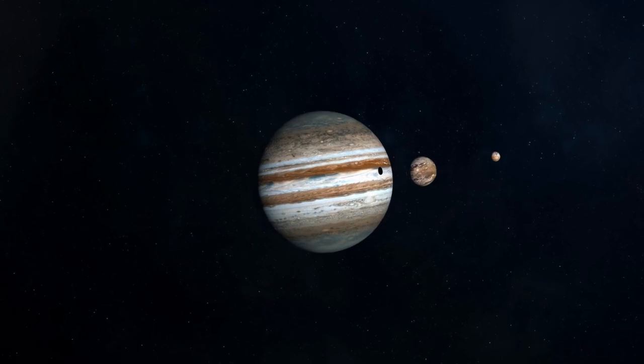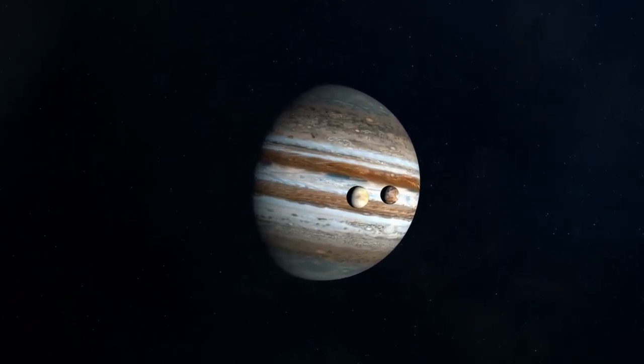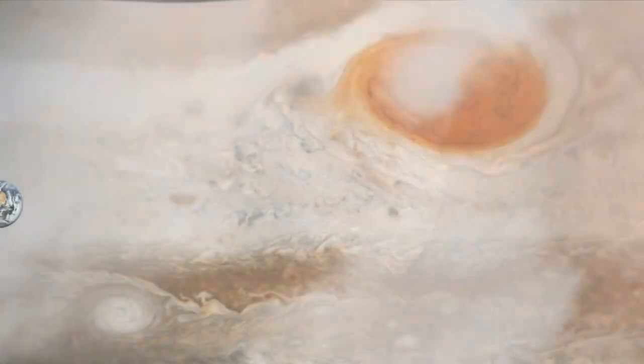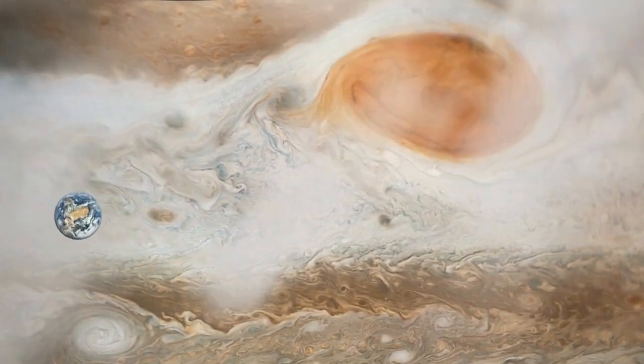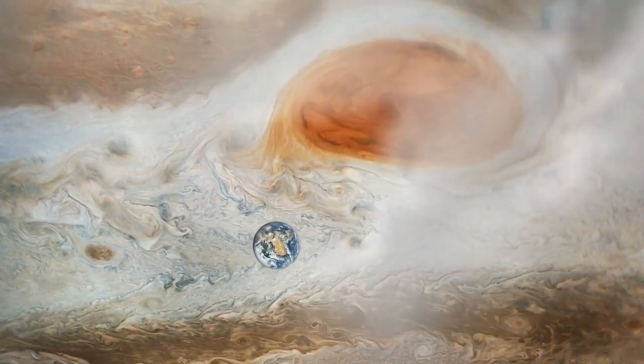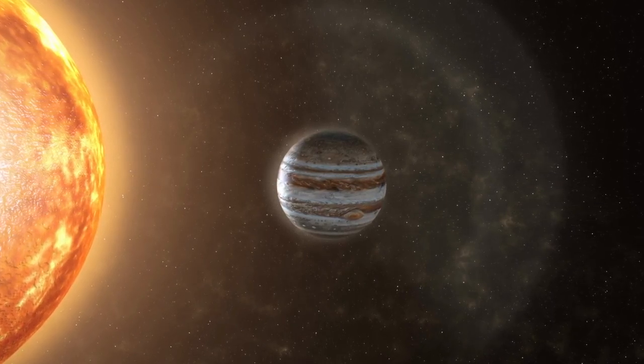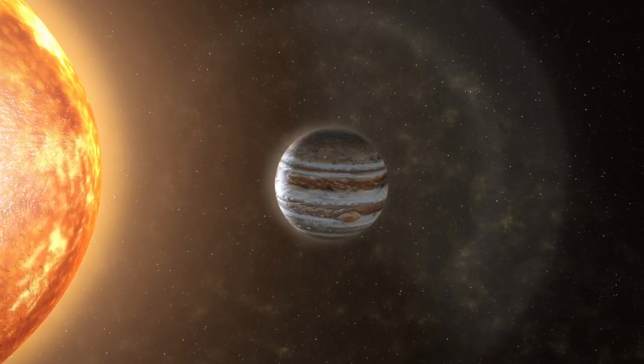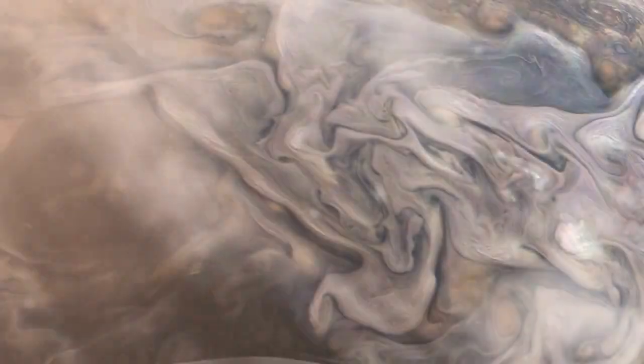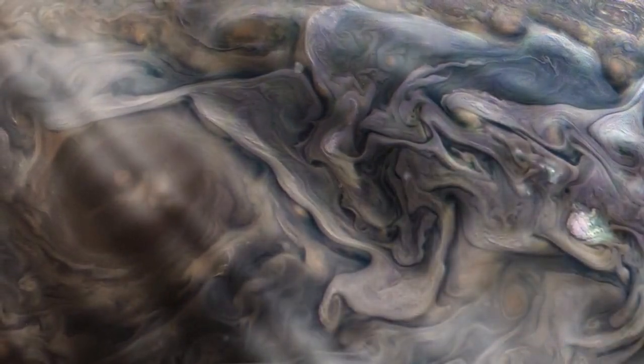Jupiter has the most moons of any planet in the solar system, with over 92 known satellites. Jupiter's Great Red Spot, a massive storm in its atmosphere, is so large that three Earths could fit inside it. Jupiter's magnetic field is the strongest of any planet in the solar system, and it creates intense radiation belts that can be dangerous for spacecraft and astronauts.